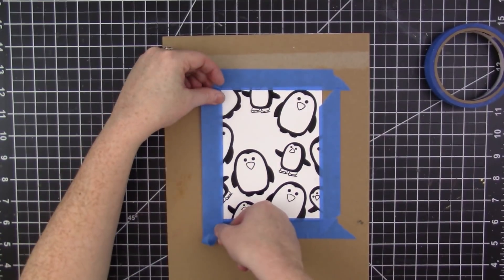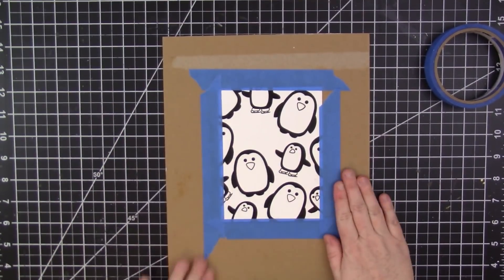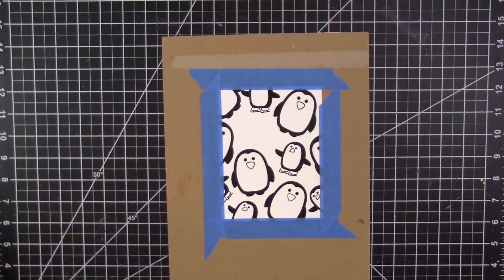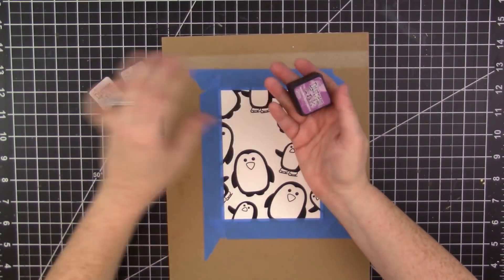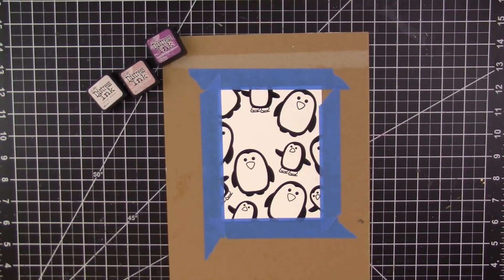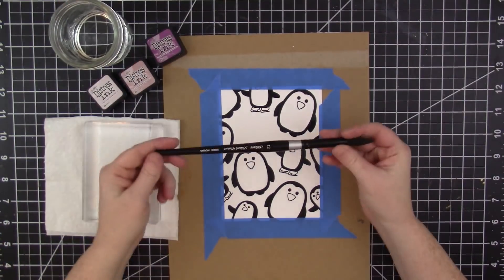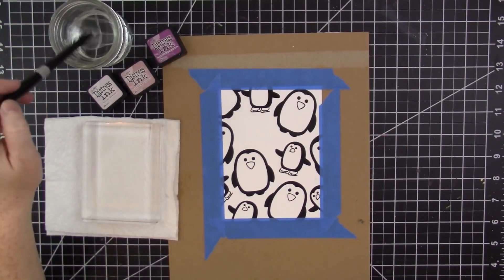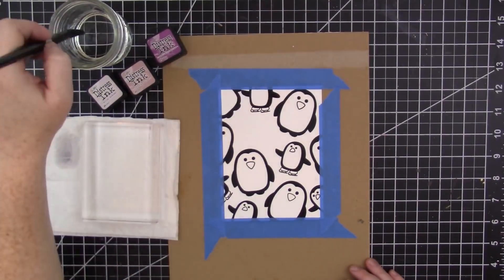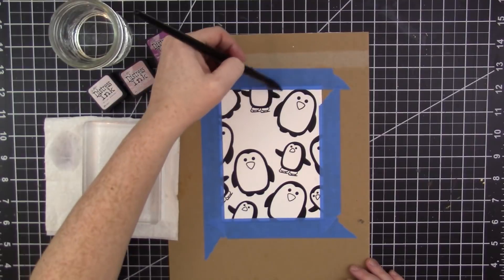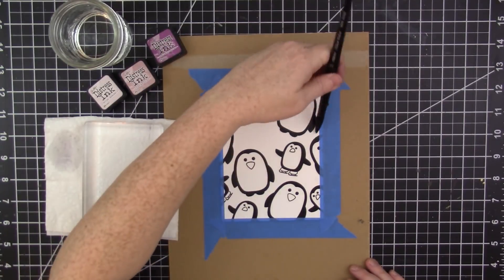So for the watercolor, I'm actually going to be using distress ink as my watercolor, but instead of using an ink blending tool, I'm going to turn the ink into watercolor. And you can do that by just smooshing some of the ink directly onto a non-porous surface. I'm using a clear acrylic block.